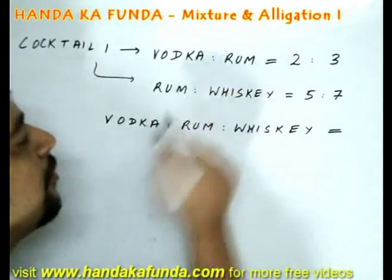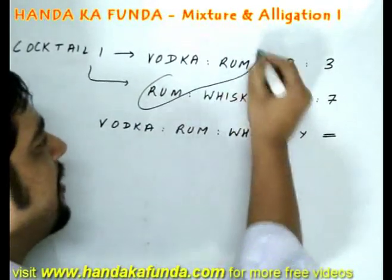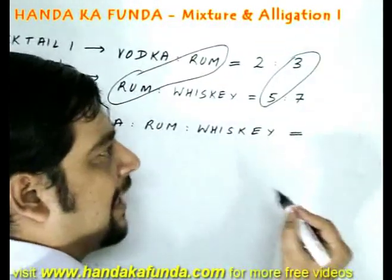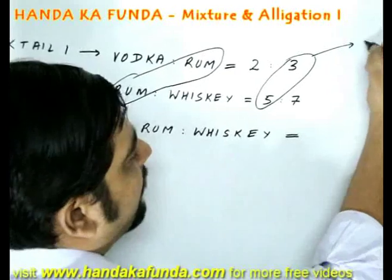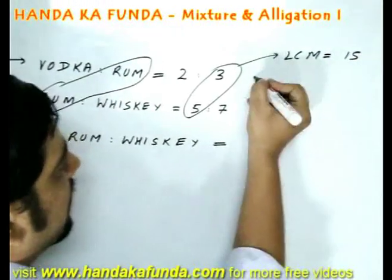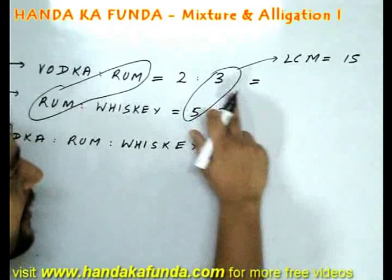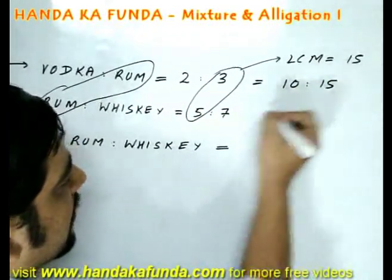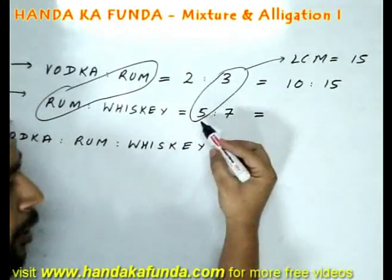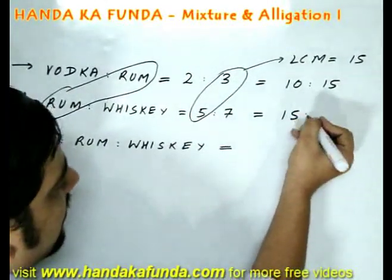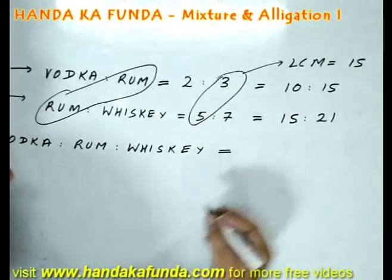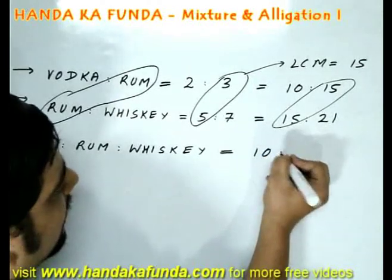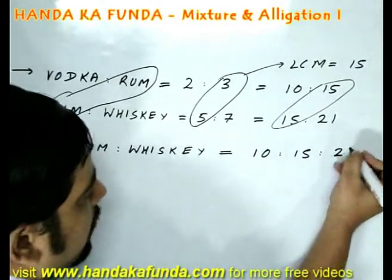We look at what is common to both the ratios. Rum is common to both, so we look at the values 3 and 5, and take the LCM of the two, which is 15. A ratio of 2 to 3 can be converted to 10 to 15, and a ratio of 5 to 7 can be converted to 15 to 21. So the overall ratio, with rum as the common element at 15, is 10 to 15 to 21.